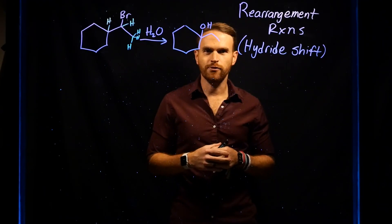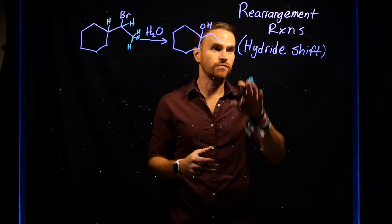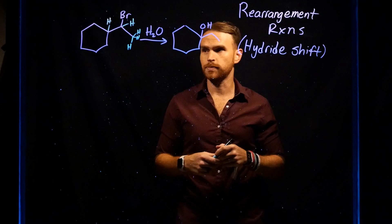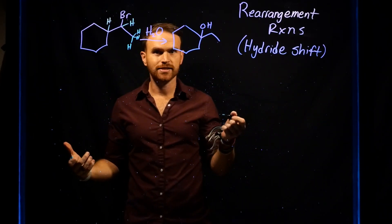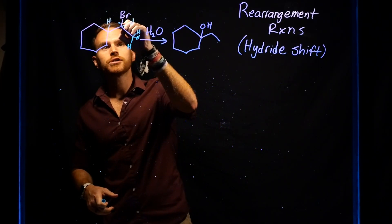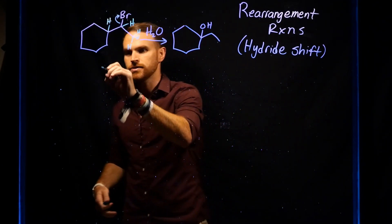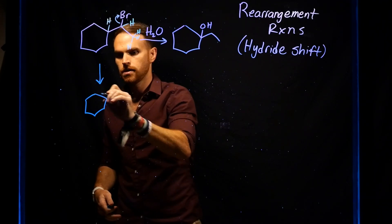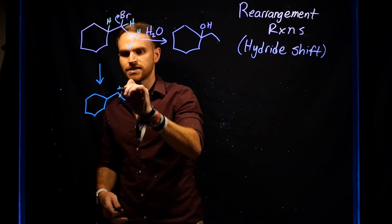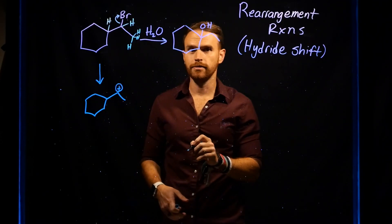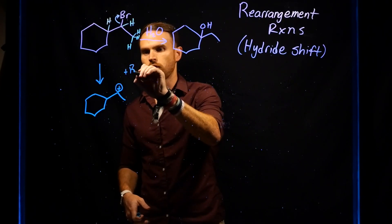Let's consider the mechanism for this transformation that occurs via a hydride rearrangement. The first step in an SN1 reaction is the loss of the leaving group, where the Br is coming off as Br-. This generates our secondary carbocation with our Br-.